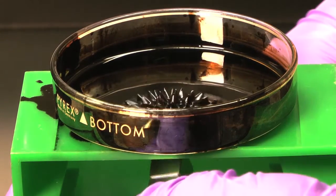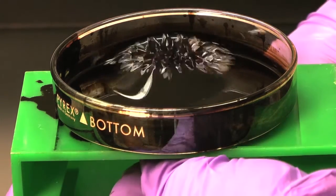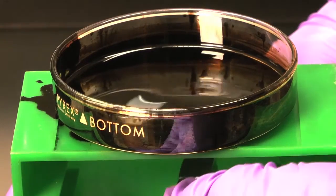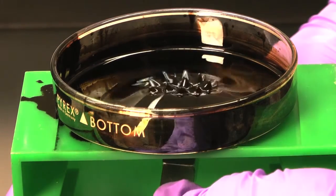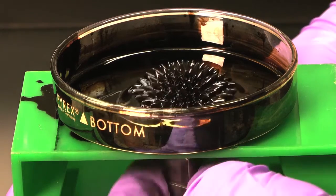If we strengthen the magnetic field by bringing the magnet closer or adding another magnet, the number of spikes increases. We are seeing the magnetic field lines in three dimensions. When the field is stronger, the lines are more densely concentrated.